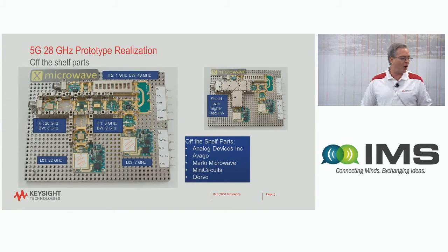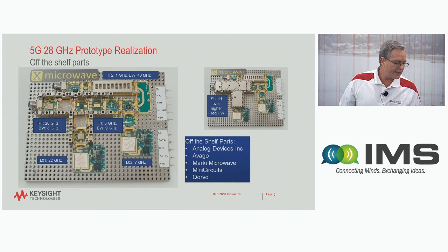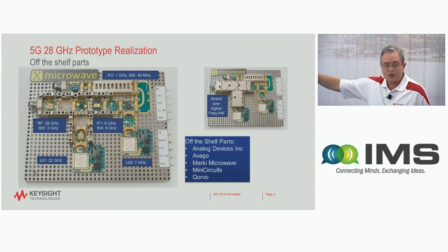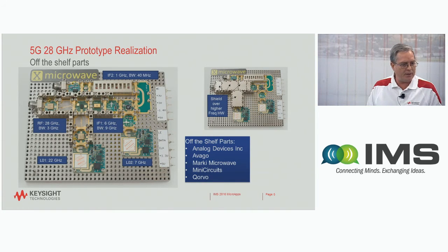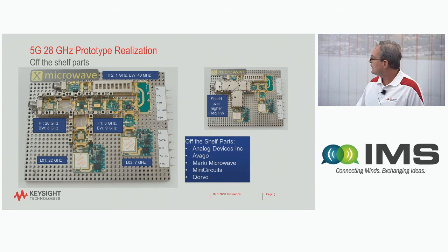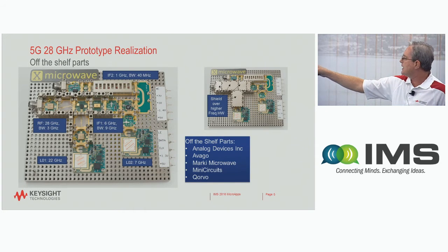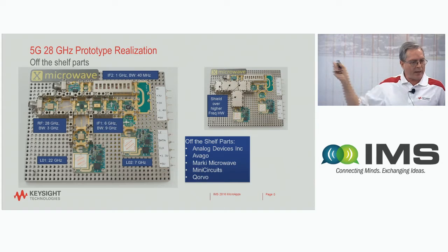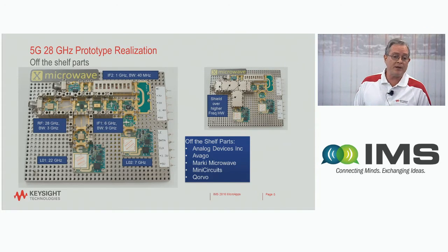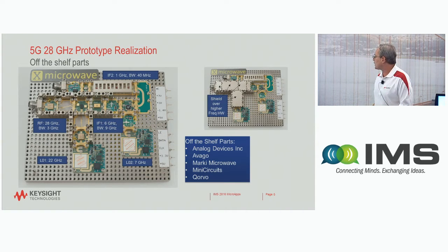What I want to show you here is actually the hardware. This system is a replica of the schematic I just showed. There are two output connectors on the upper left; the lower one is the RF input at 28 gigahertz. We've got the shields off so you can see what's in the hardware. We have a 22 gigahertz LO that we mix with the 28 gigahertz coming in, then the IF, and then the second IF, and then the 1 gigahertz output. Some of the vendors we've used with off-the-shelf parts are Analog Devices, Avago, Mini Circuits, Marki Microwave, and Qorvo.